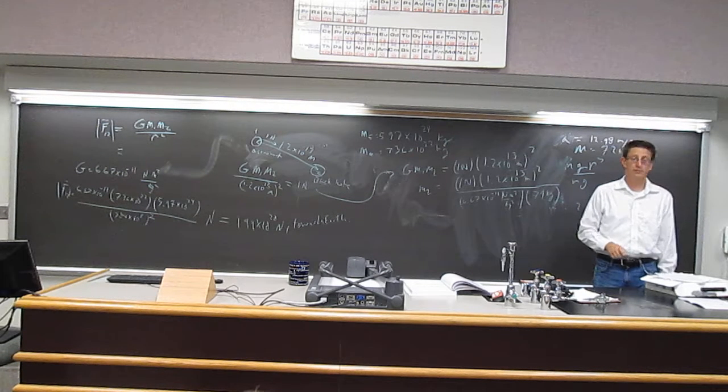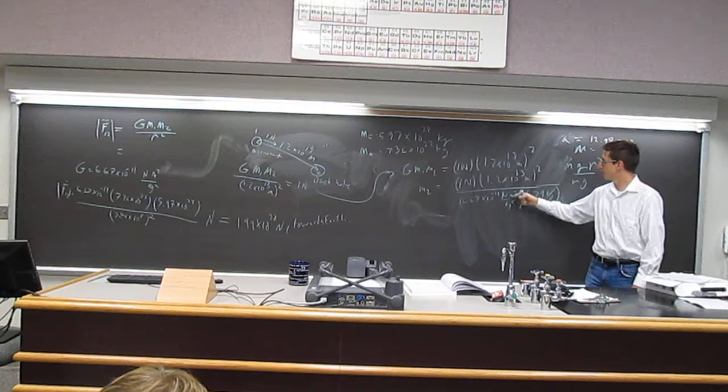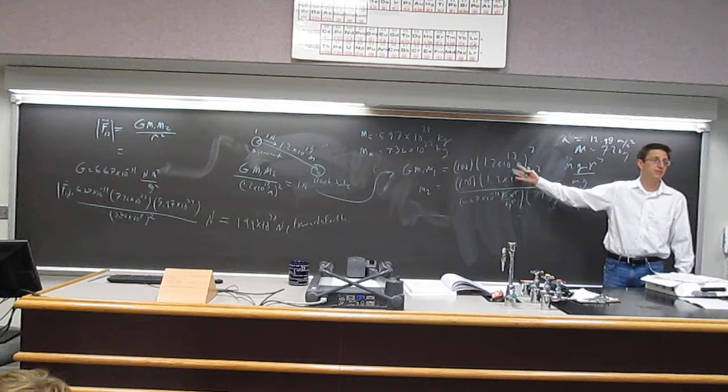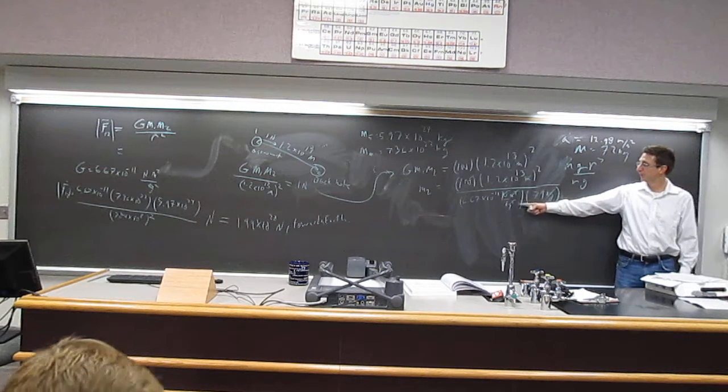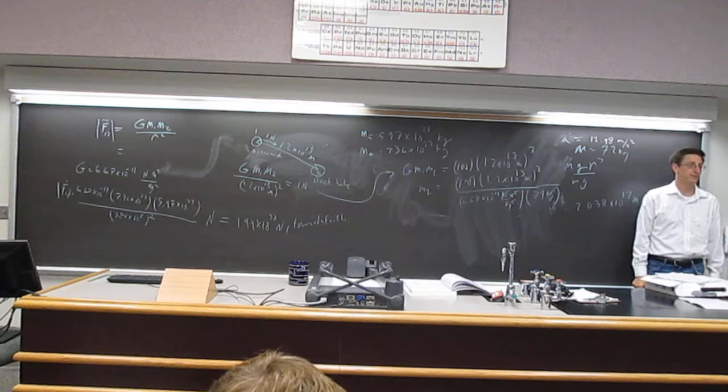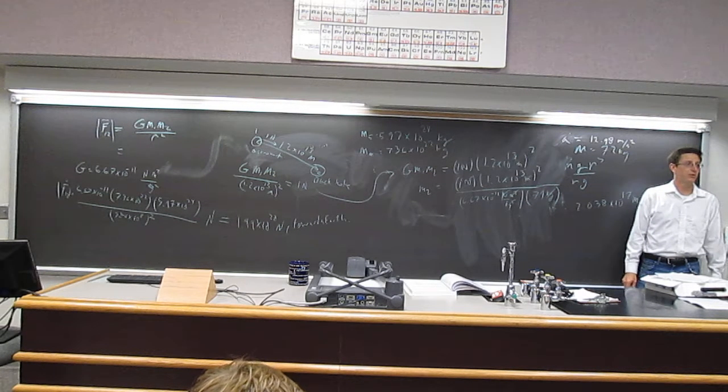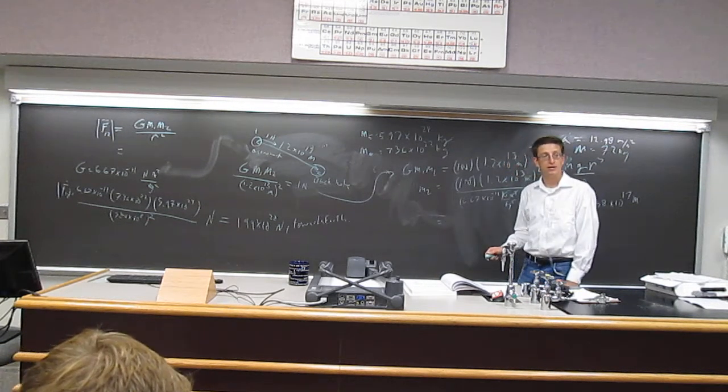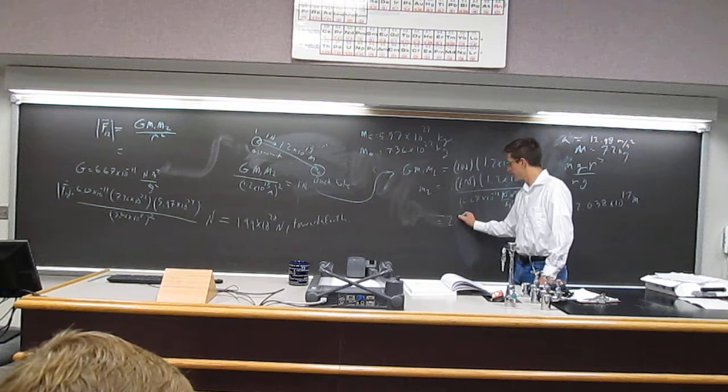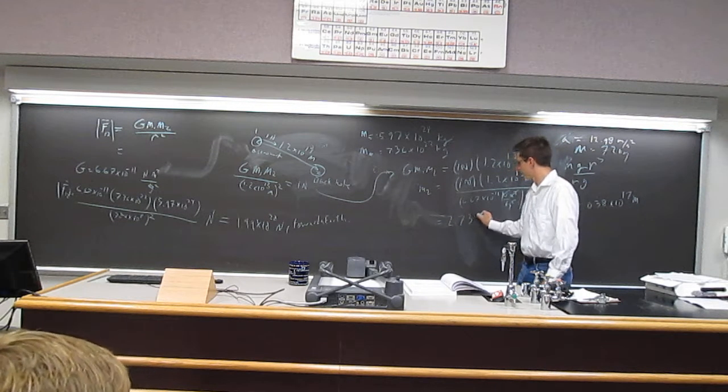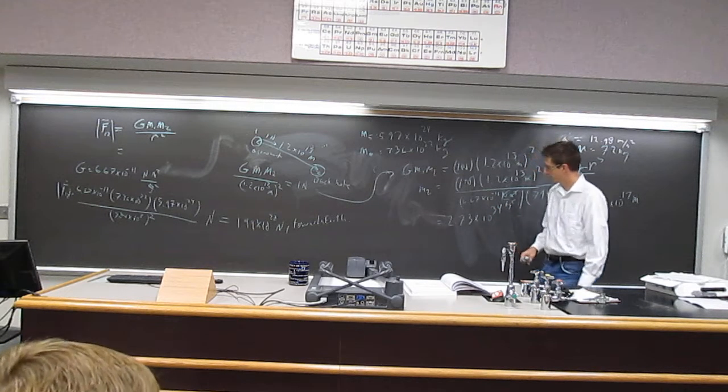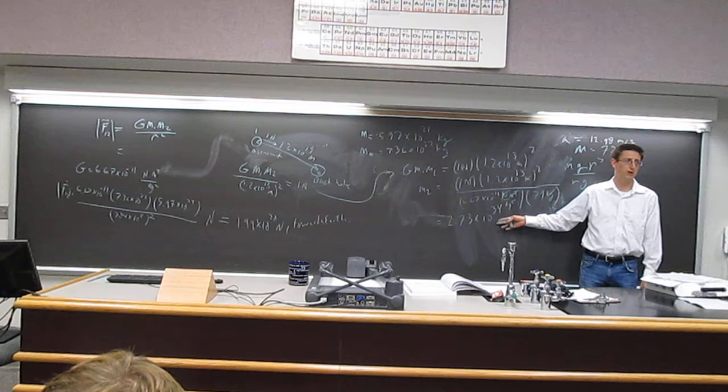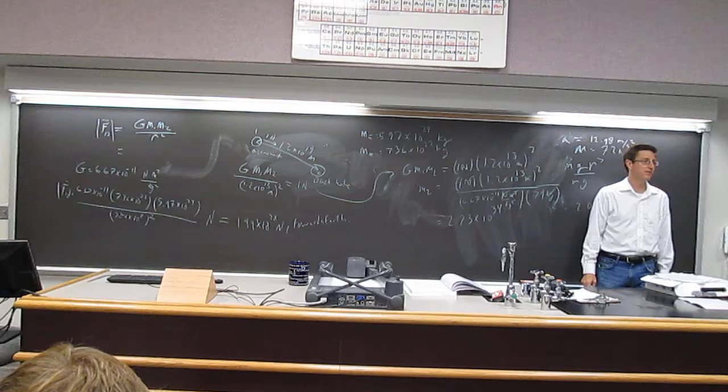And what do you get? By the way, units work out, because in the bottom, this unit cancels to that, this meter squared cancels to that. I have 1 over 1 over a kilogram, which is just a kilogram. So what do you get? 2.73 times 10 to the 13. A sum, I think, is 1.99 times 10 to the 31. So this is over a thousand times heavier than the sun.